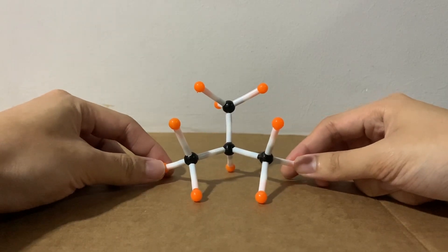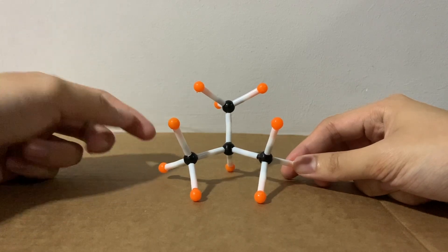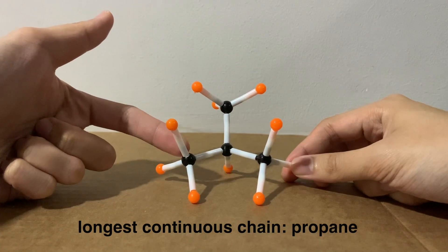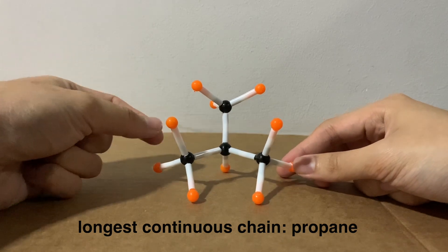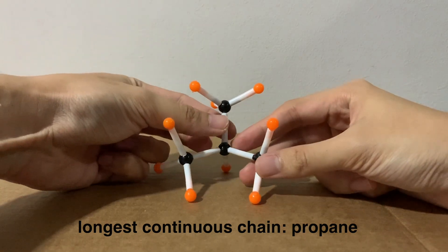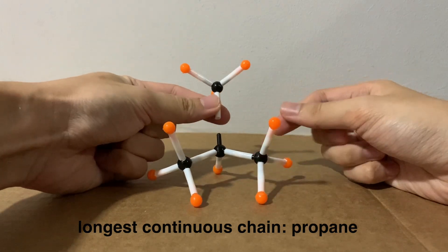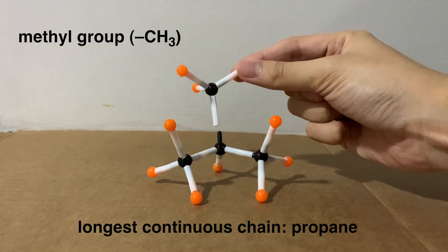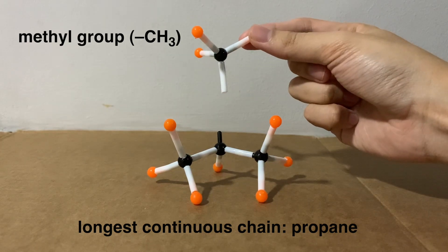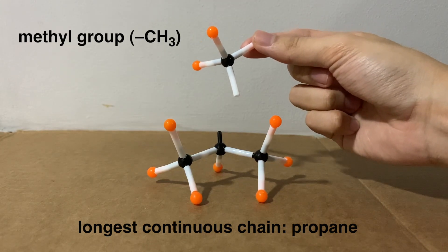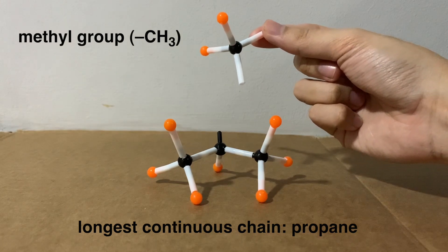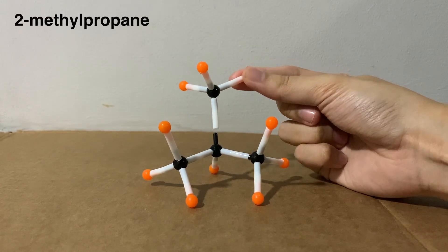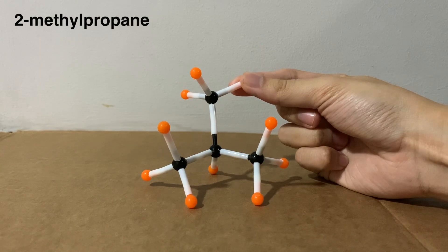So how do we name a branch alkane like this? First, we look for the longest continuous chain, in this case is three. And the name would therefore end with a propane, prop meaning three carbons. And then we look for any branches, so it branches out from the center. If I would just plug this out, we have a CH3, one C and three H's attached to the middle one. So a branch like this, one C and three H, we call it a methyl group. The name is derived from methane. And putting this here on carbon number two, the one in the middle, we will call it 2-methyl propane. All right, so that's the name you see here.